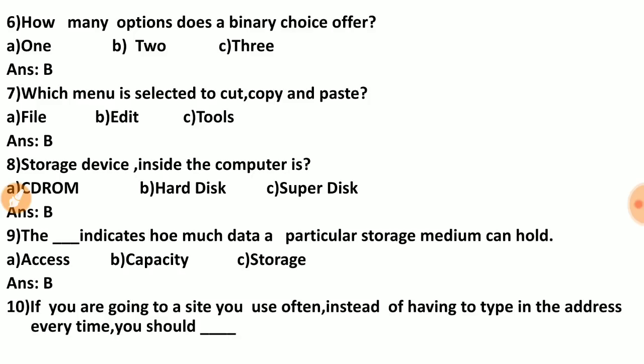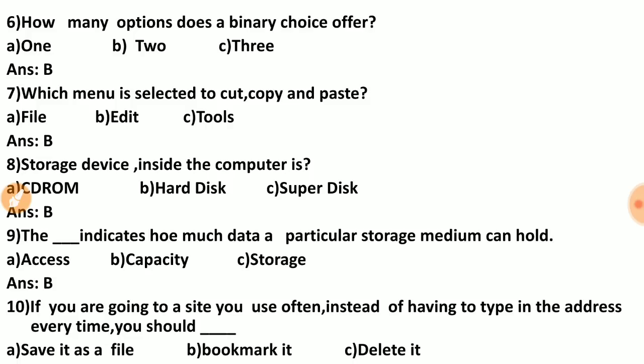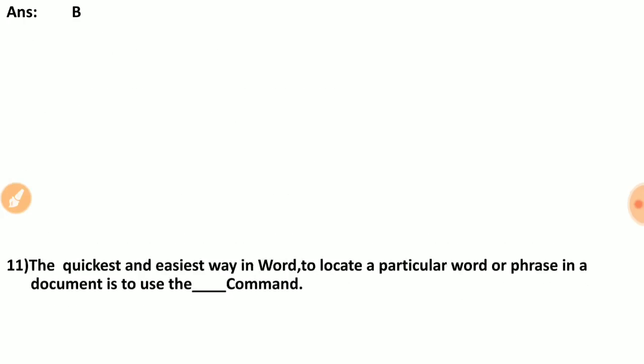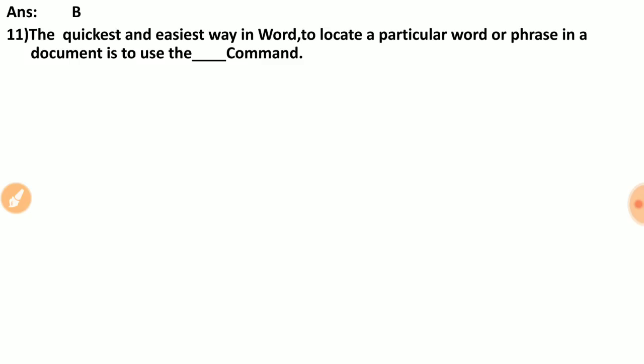Question ten: if you visit a site often, instead of typing the address every time, you should dash. Options are: save it as a file, book it, bookmark it, delete it. The correct answer is bookmark it. If you bookmark a site, you can directly access it without typing the address repeatedly.